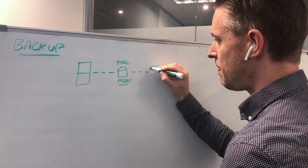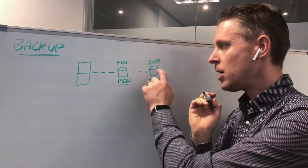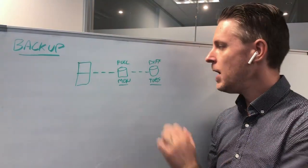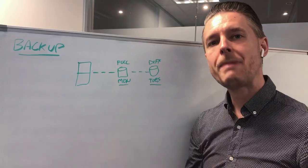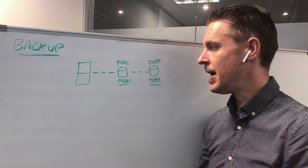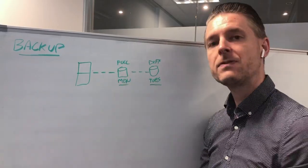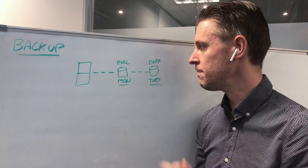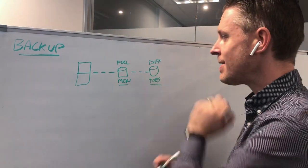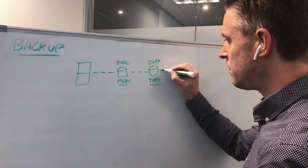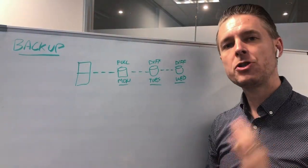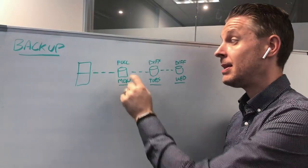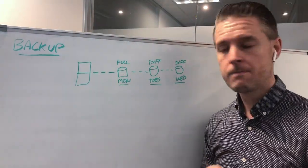A differential is slightly different. Starting with the first full backup on Monday, a differential backup is similar to an incremental in the sense that it will only back up the changes made since the last full backup, because the full already has all the other files covered.